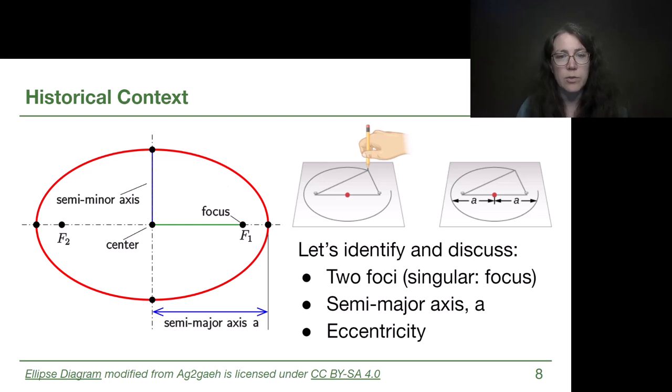So here on the left we have a diagram of an ellipse with several different labels, and on the right we see an example of if we were to take a piece of paper and put two pins in it and string some string through the pins so that we were carving out a location based on that string loop, we would get an ellipse. Now let's discuss these different terms and what they mean.